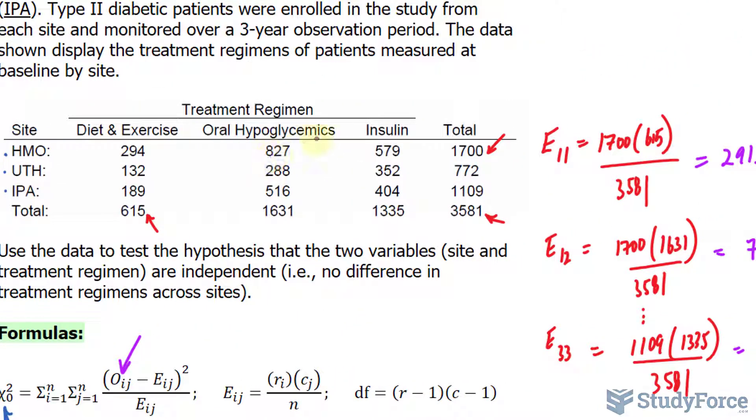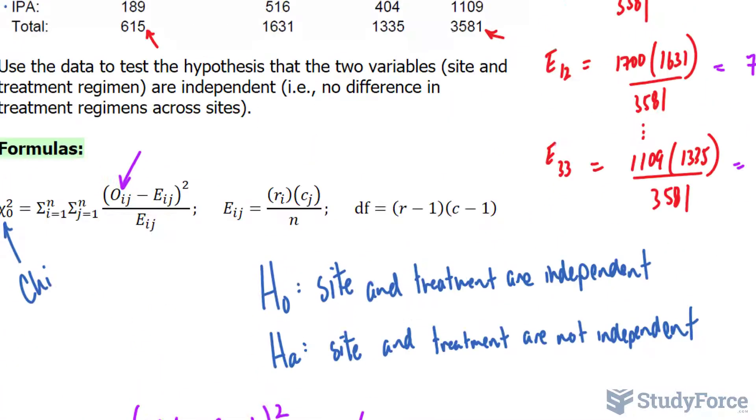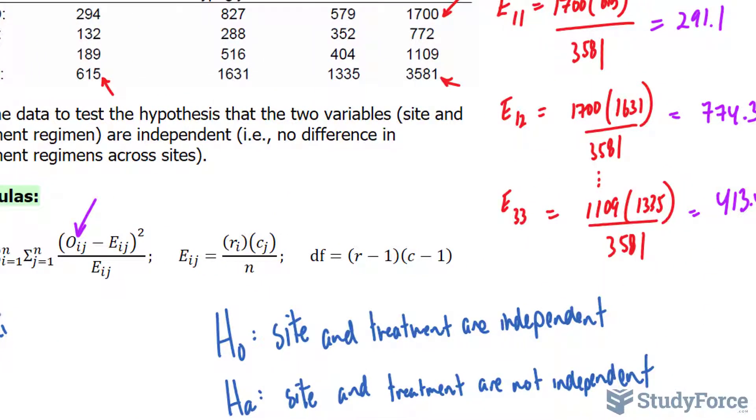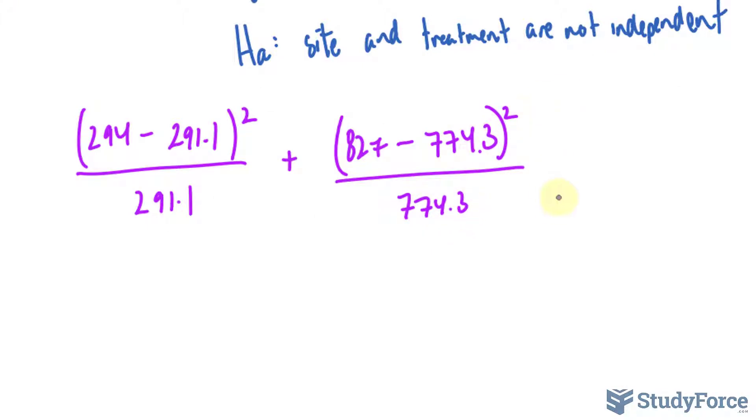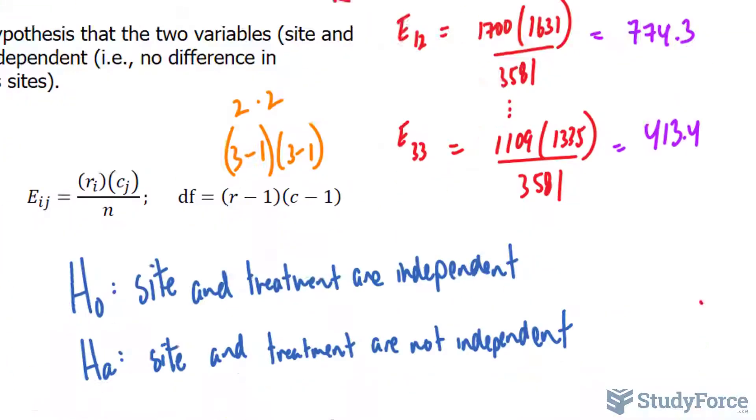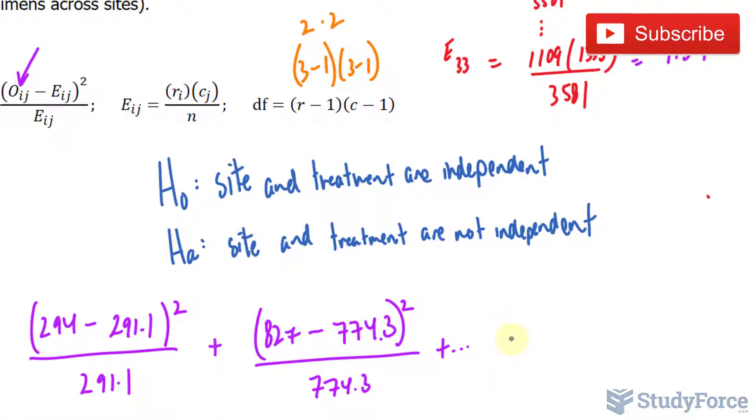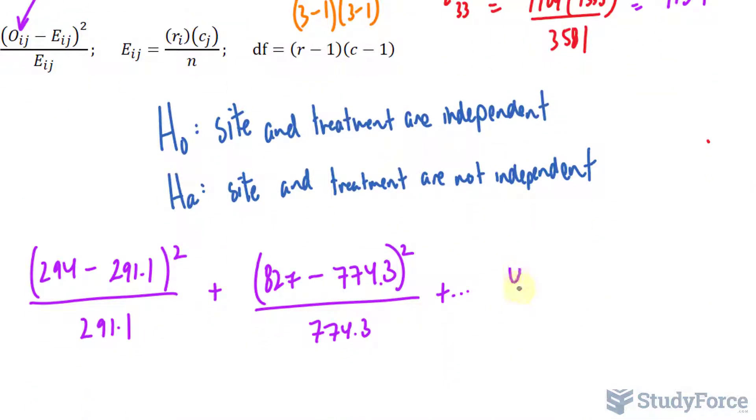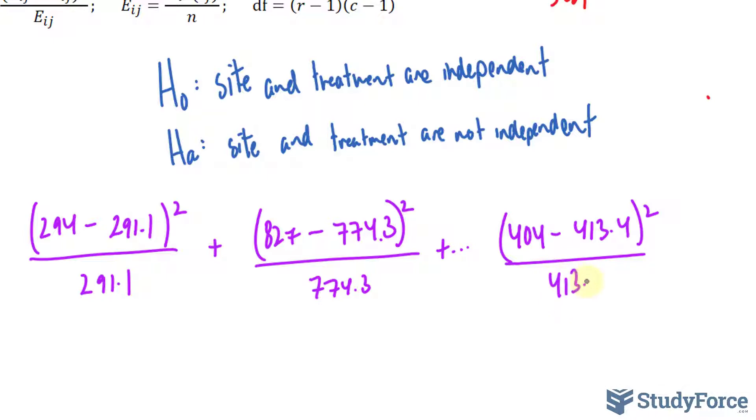So the next one would be eight two seven minus the value that we found earlier, seven seven four point three. Seven seven four point three, raise that to the power of two, over seven seven four point three. And since we skipped a few up here, I'll do the same thing down here, where we have that last calculation as four hundred and four minus four one three point four raised to the power of two over four one three point four.